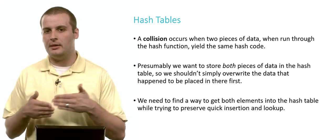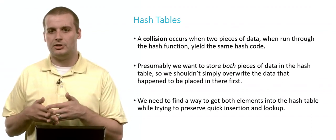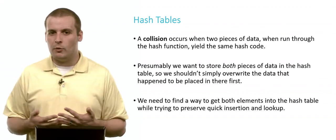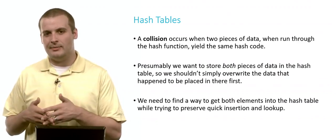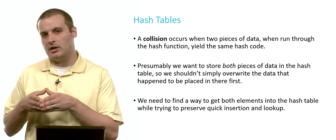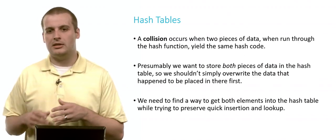How do we do it, though, if he and Paul both yield hash code 6? We don't want to overwrite Paul. We want Paul to be there, too. So we need to find a way to get elements into the hash table that still preserves our quick insertion and quick lookup. And one way to deal with it is to do something called linear probing.